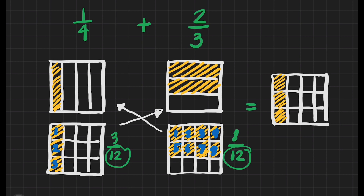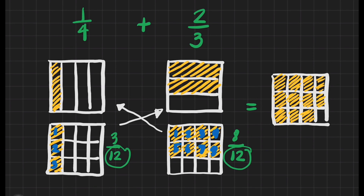And in here we have to shade 8 parts: 1, 2, 3, 4, 5, 6, 7, and 8. So if we count the total number of shaded parts we have: 1, 2, 3, 4, 5, 6, 7, 8, 9, 10, and 11. It means our answer is 11/12.